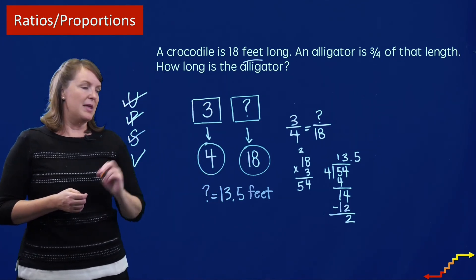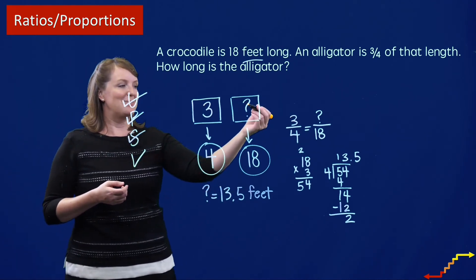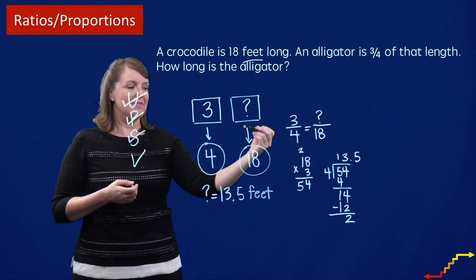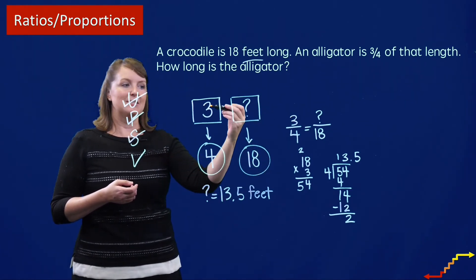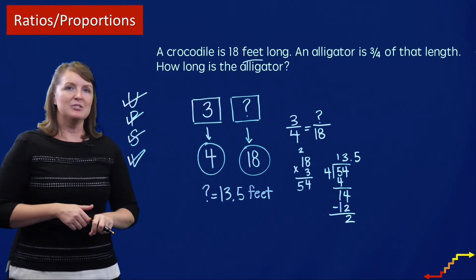So we've solved the problem. And then how could I check this work? I could plug this here into my equation to ensure that 13 and a half is equivalent to 18 in the same way that that's 3/4 of 18. So I have double checked my work there.